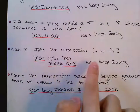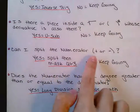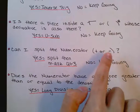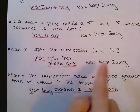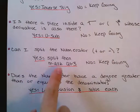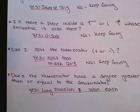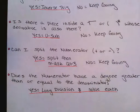The next one says: can I split the numerator? Meaning, are you going to see different terms being added or subtracted in the numerator? If yes, then split it, and once you split it you can integrate each of them individually. Then go back up and re-ask questions one through three — you could probably catch an LN in there, an inverse trig, or a u-sub.